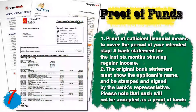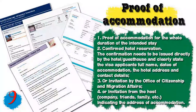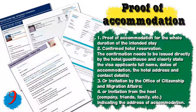Number eight, you will need a flight reservation. A preliminary booking of a flight ticket including the return trip must be presented. In some cases, for some countries, this flight ticket must be confirmed. Number nine, you will need proof of accommodation for the whole duration of your intended stay. It should be a confirmed hotel reservation clearly stating the visa applicant's full name, dates of accommodation, hotel address, and contact details.